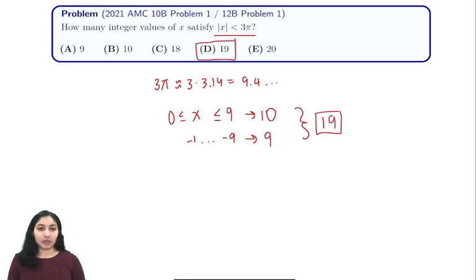So in this problem, all we did was look at our absolute value, separate it into positive and negative cases, and then sum the results.